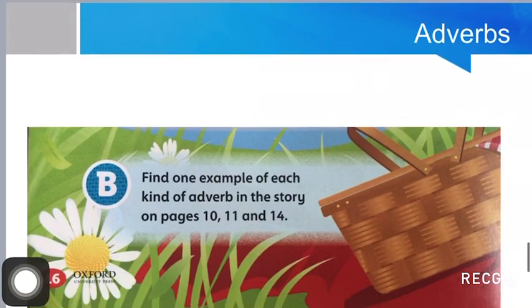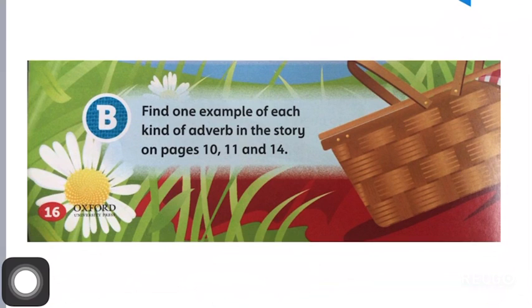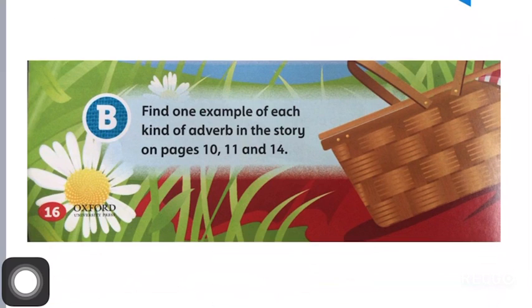Now, my dear friends, this is question number B on page number 16 of your book. Find one example of each kind of adverb in the story on pages 10, 11, and 14. You will read all these pages and underline the adverbs — those talking about adverb of manner, adverb of time, and adverb of place. This is your home assignment, and I hope you have understood all these things. I will also be translating everything into Urdu for convenience.